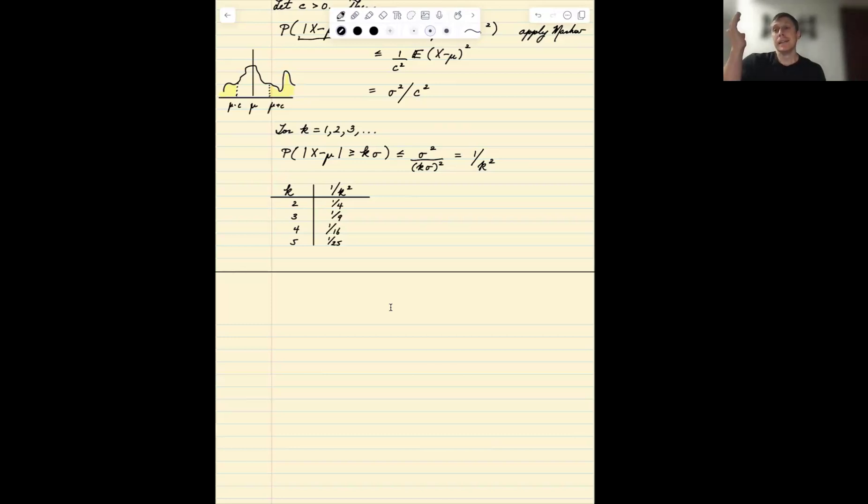Now, in general, these are very high upper bounds because these apply generically to any random variable with a given mean and standard deviation and any distribution. So a lot of the distributions we see will have probability values much, much less than this, and one in particular being the normal distribution.